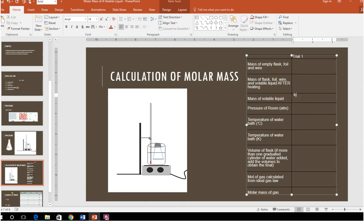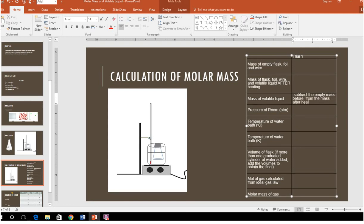So to get the mass of the volatile liquid, all you're going to do is subtract the empty mass before from the mass after heating. It's going to be a relatively small number, something on the order of like zero point something.